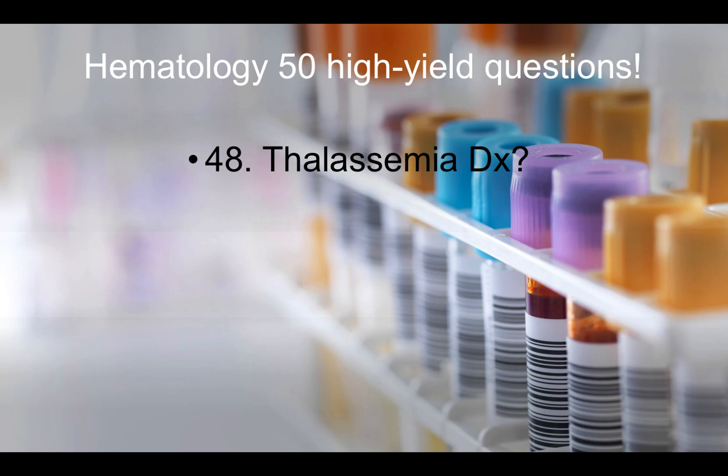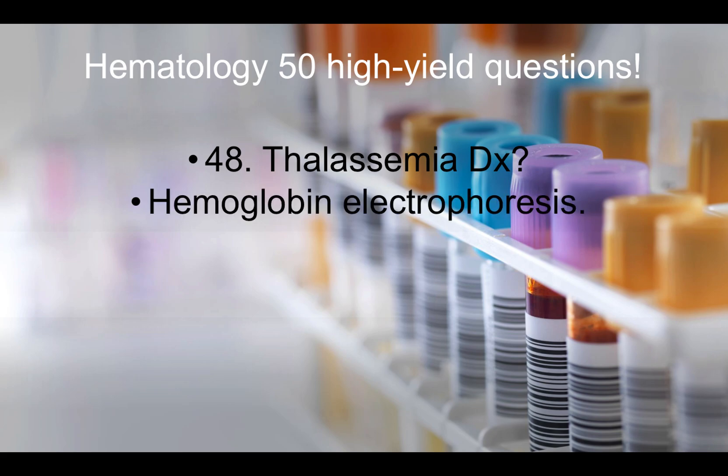Question forty-eight: Thalassemia diagnosis — it is diagnosed with hemoglobin electrophoresis. In a question stem about a patient with thalassemia asking for the next best test, that would be hemoglobin electrophoresis.